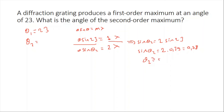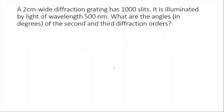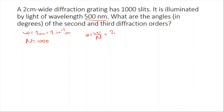Example two: a 2 centimeter wide diffraction grating has 1000 slits. So the width W equals 2 × 10⁻² meters and the number of slits N equals 1000. It is illuminated by light of wavelength 500 nanometers. What are the angles of the second and third diffraction orders? First, let's calculate the slit separation: a equals W divided by N equals (2 × 10⁻²) divided by 10³, which equals 2 × 10⁻⁵ meters.